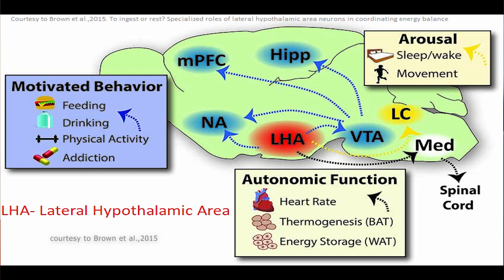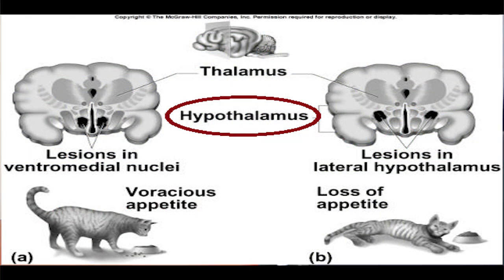Stimulation of the lateral hypothalamus not only causes thirst and eating but also increases the general level of activity of the animal, sometimes leading to extreme anxiety. Lesions in the hypothalamus generally cause effects opposite to those caused by stimulation. Bilateral lesions in the lateral hypothalamus decrease drinking and eating almost to zero, often leading to lethal starvation, and also cause extreme passivity with loss of most drives. Bilateral lesions of the ventromedial areas, by contrast, cause excessive drinking and eating, hyperactivity, and often continuous savagery with frequent bursts of extreme rage on the slightest provocation.